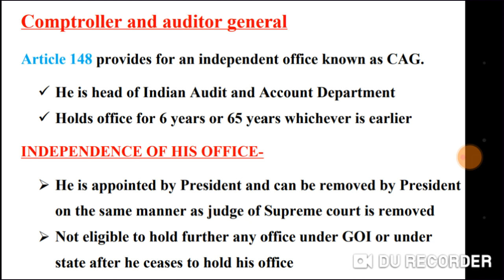Article 148 establishes an independent office of the CAG. The CAG is the head of the Indian Audit and Accounts Department. The CAG holds office for 6 years or until the age of 65 years, whichever is earlier.